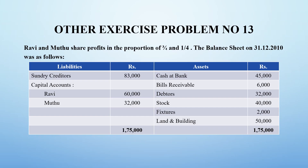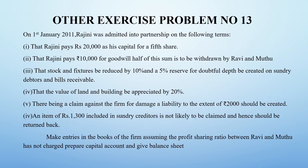This is our question. Ravi and Muthu were partners in the three-fourth and one-fourth ratio, and this is the status when they both were partners as on 31.12.2010. Now, Rajini has entered with the following conditions. We have to make necessary entries for the revaluation account, capital account, and balance sheet.